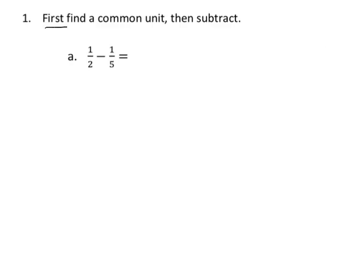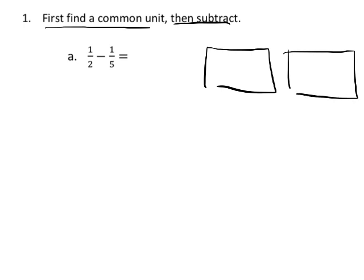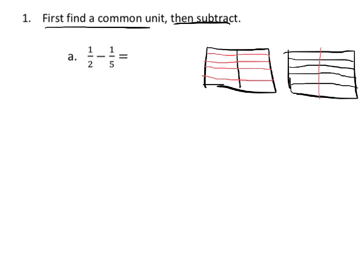So it says first find a common unit, then subtract. The idea would be students can visualize if they want. A couple of ways you as the teacher or you as the parent can help, you can ask the student to visualize what this would look like if we were to draw the area model, and we would know that, okay, this is a half, and then this one would be a fifth, one, two, three, four, five. But then in order to get common denominators, the half would be cut into fifths, and the fifths would be cut into half.